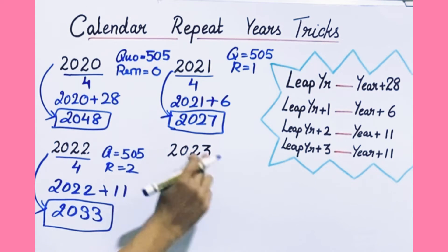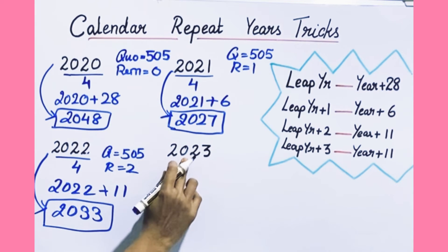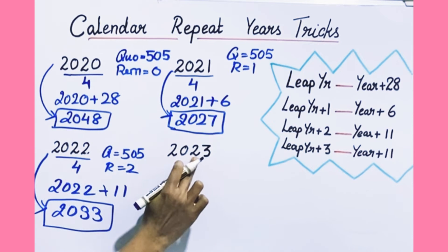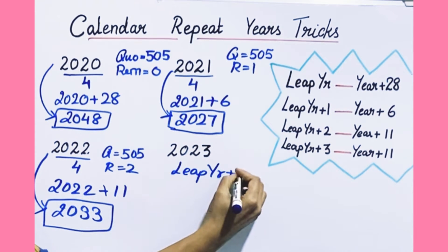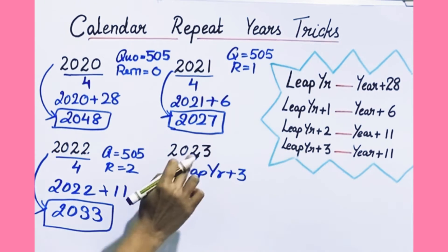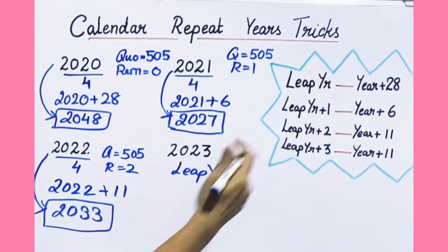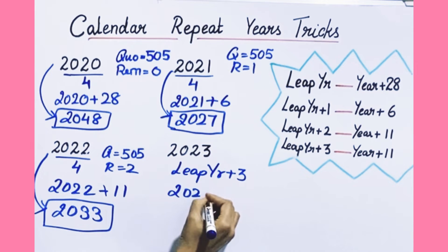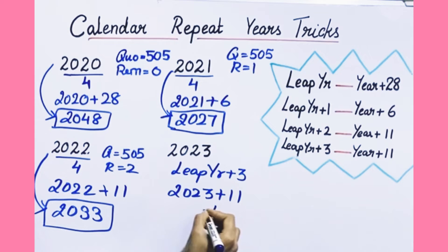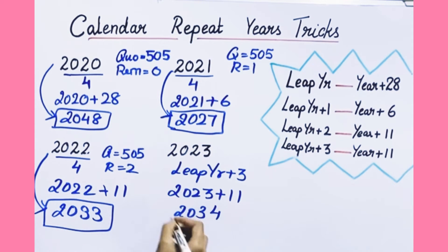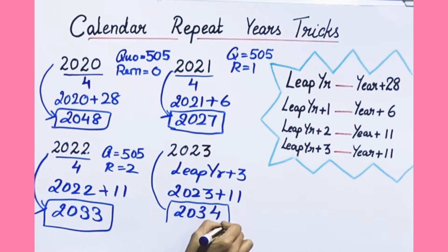Next, 2023. This year — 2020 is a leap year, so 2023 is leap year plus 3. If it is leap year plus 3, then you have to take the year and add 11. So 2023 plus 11 equals 2034. So 2023 repeats in 2034.